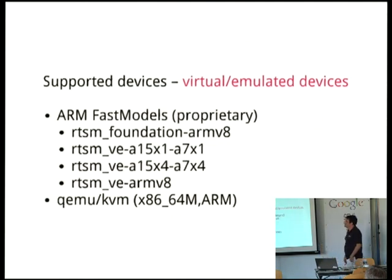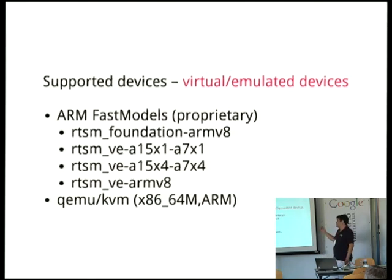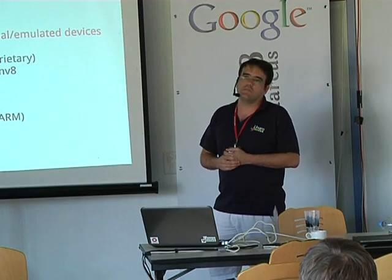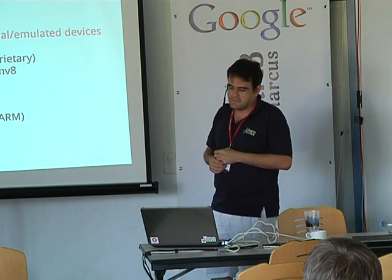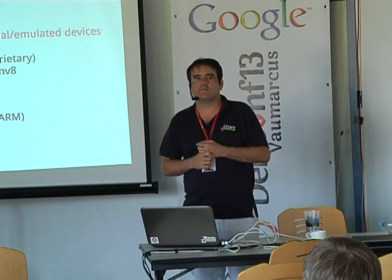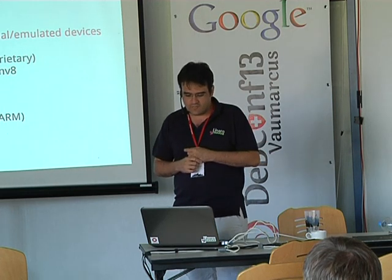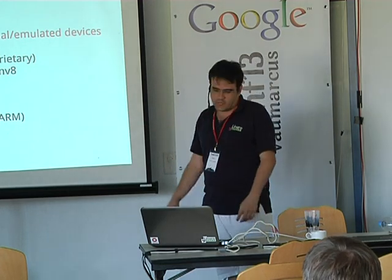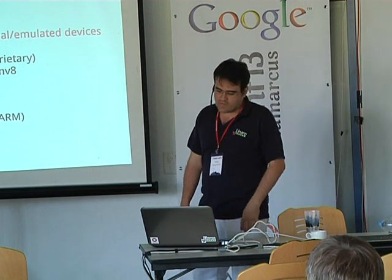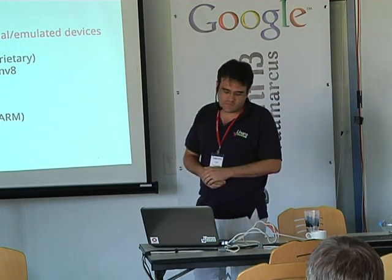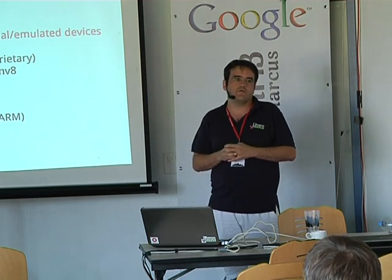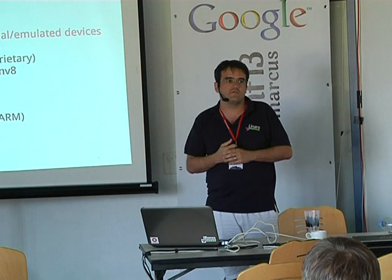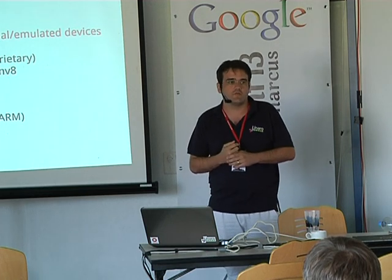We also support virtual and emulated devices. We have support for the ARM fast models, which are the proprietary emulators for non-released hardware by ARM. Fast models is the most misnamed product in history, because they are not fast at all. We also support QEMU and QEMU KVM, so we can support both ARM on QEMU and x86 KVM, which is useful for doing kernel CI on x86 and making sure that ARM work doesn't break x86, because that makes upstream kernel developers very angry.